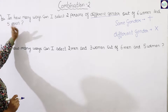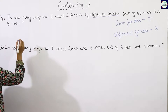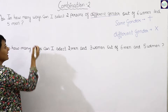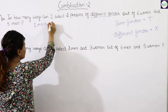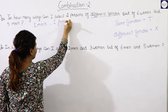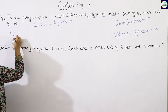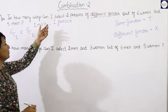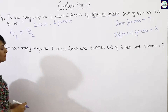In how many ways can I select two persons of different gender out of six women and five men? Since we need two persons of different gender, one must be male and the other female. So we select one from six women and one from five men.